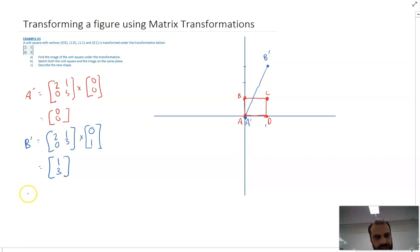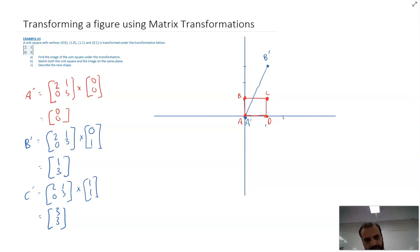Okay, what about C dash? Well, C dash again: [2,0; 1,3] times whatever C was, which is (1,1). Now you can do that matrix multiplication yourself. It looks like the answer is (3,3). So 1, 2, 3, and that's C.